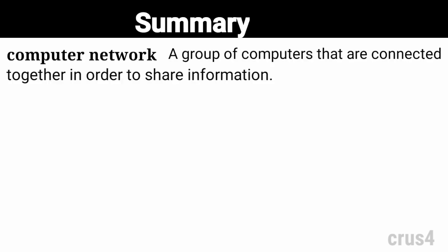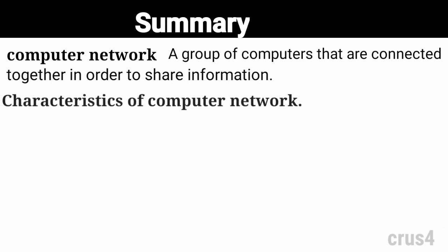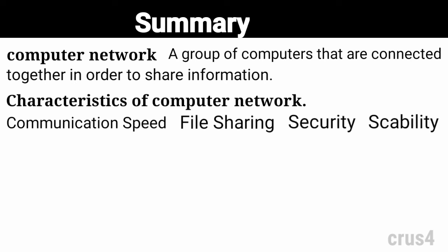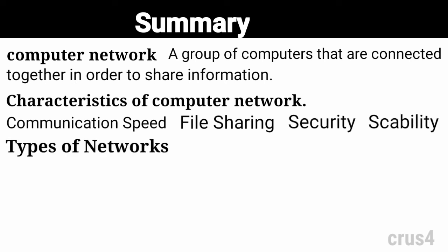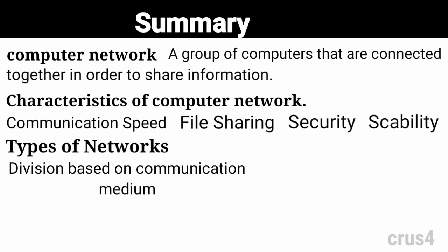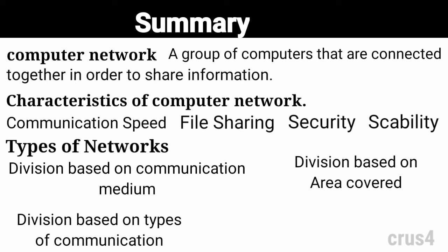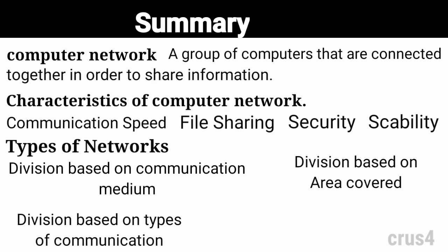Now at the end, let me remind you what we have learned in this lecture. First, we learned what is computer network — a group of computers connected together to share information and resources. Then we learned characteristics of computer networks, which includes communication speed, file sharing, security, and scalability. After this, we learned types of networks, which we divided based on four factors: communication medium, area covered, types of communication, and type of architecture.